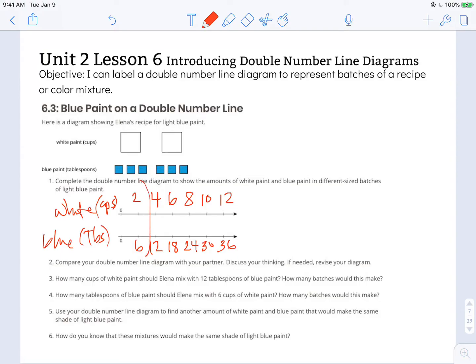So again this is one batch right here of that recipe that she has. Number three says how many cups of white paint should Elena mix with twelve tablespoons of blue paint? So I'm going to go to my blue paint and I'm going to find twelve tablespoons and I can see that it matches with four cups of white paint.